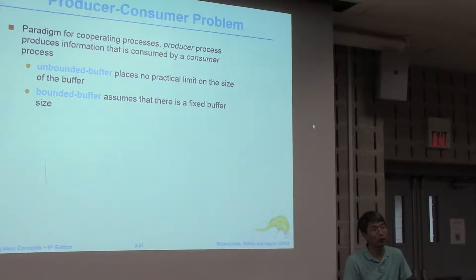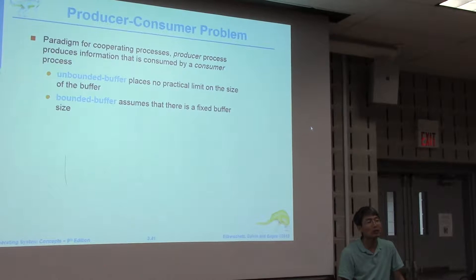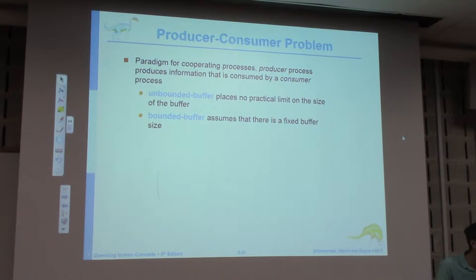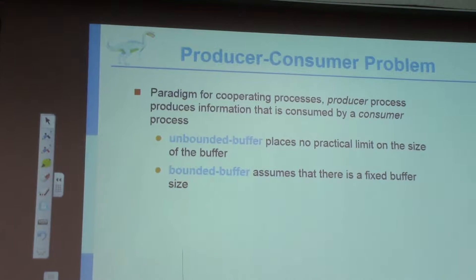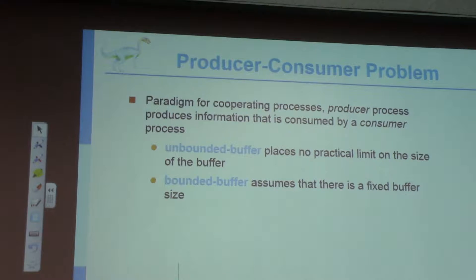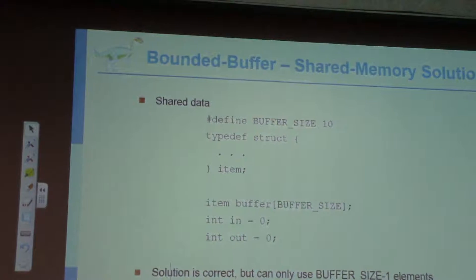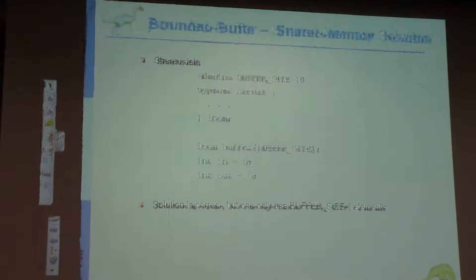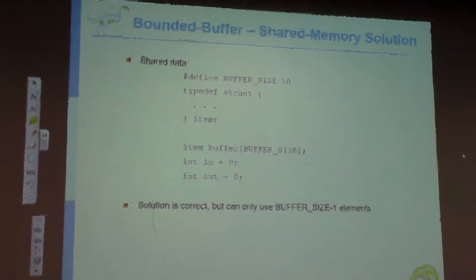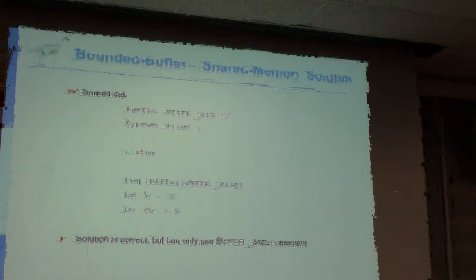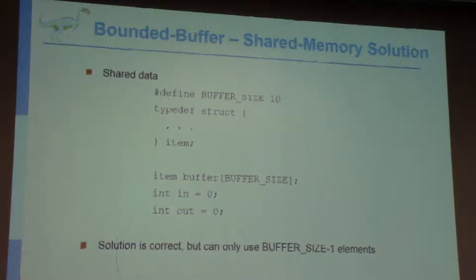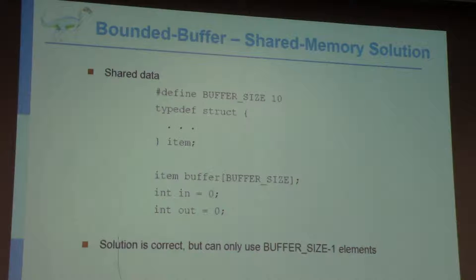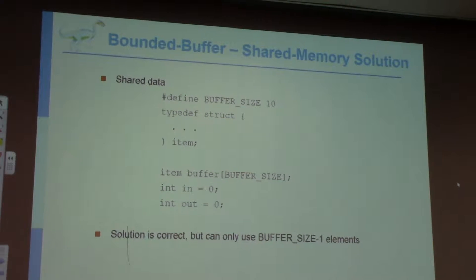Using IPC or process communication tools, processes can work together — they can share information so they don't have to reprocess it. They can also share the job for speed, modularity, and other benefits. How can we design cooperation between processes? We use the producer-consumer model. The producer feeds data and the consumer reads it — this is one design model for process cooperation.